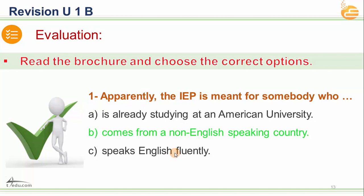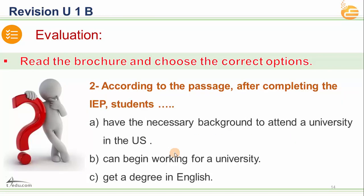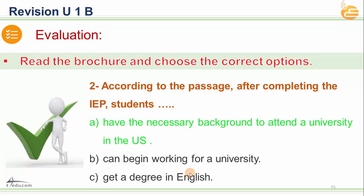If you are Saudi and going to Indiana University, you must follow the IEP because your mother tongue is Arabic, not English. Question two: According to the passage, after completing the IEP, students do what? Option A: have the necessary background to attend a university in the US. Option B: can begin working for a university. Option C: get a degree in English. The answer is A — your English is now ready for any university in the US.